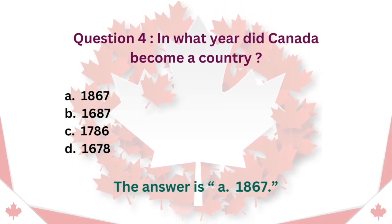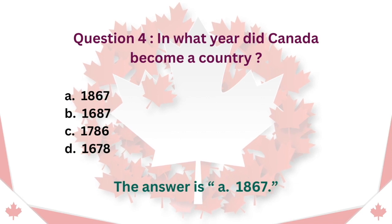Question 4: In what year did Canada become a country? A. 1867. B. 1687. C. 1786. D. 1678. The answer is A. 1867.